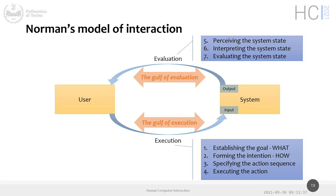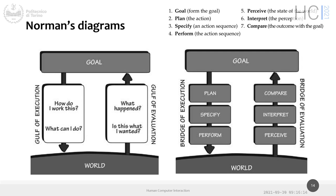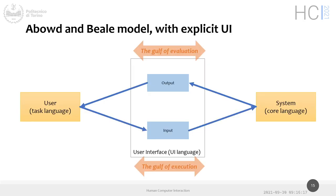These two exchanges of information were called the 'gulfs' by Norman. A gulf is something that keeps separate the two sides, and we must cross these two gulfs — execution and evaluation — many times a day. The goal of good interfaces is making these gulfs as narrow and as painless as possible.